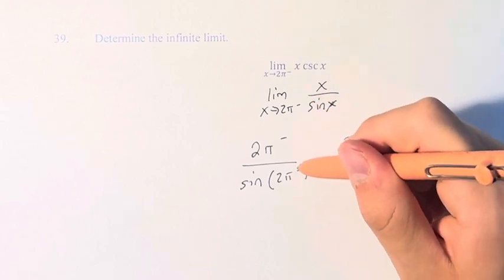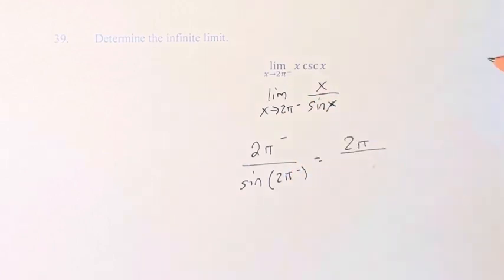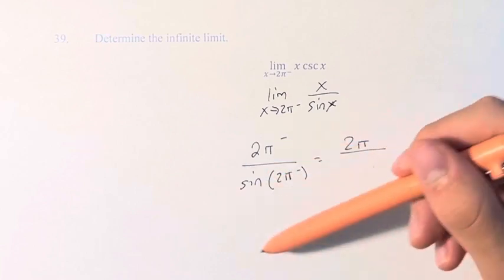Sine of 2π, it does matter whether we're approaching it from the right or the left, because one, it's in the denominator, so we can't divide by 0.